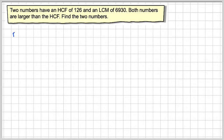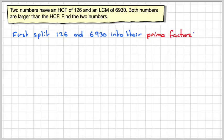The first step is to split 126 and 6930 into their prime factors. You can either use the factor tree method or the division method. I use the division method.